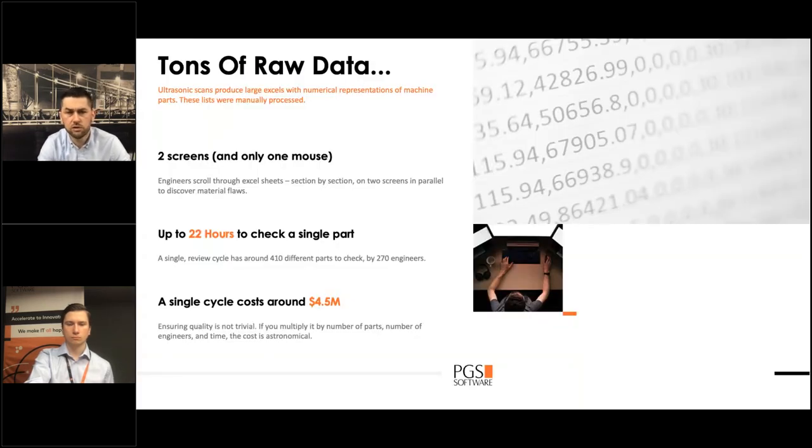And what was the main challenge we recognized? So the main challenge you can see here on the screen. To do one single check and to do a review of one single part, one engineer needed 22 hours. So these ultrasonic scanners are producing a numerical representation of the part. So tons of data needed to be reviewed by one single person during 22 hours. So one cycle for our customer to review 10 different parts by 270 engineers took circa one week and was a cost of 4.5 million US dollars for them. So huge amount of data and also huge cost of these reviews.